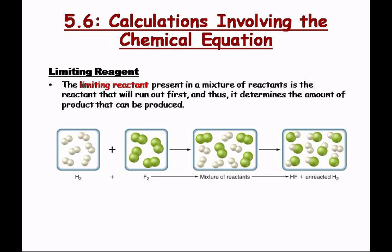If you recall what the chemical equation says, it indicates that we need one mole of hydrogen — or one molecule of hydrogen, whatever way you want to look at it — for every mole or molecule of fluorine to make one mole of hydrofluoric acid. But you see here, we've got one, two, three, four, five, six moles of hydrogen, and only four moles of fluorine. So we've got excess hydrogen. There are extra hydrogen molecules. So when we combine these four with these six, of course the four can only combine with four of these hydrogen molecules.